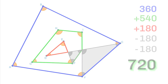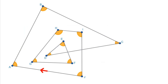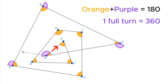Let's move on to the second solution. We call it Follow the Arrow. Imagine you are the red arrow shown in the diagram. You will race from vertex A to vertex J in order. As you go through each vertex, you will turn through the purple angles. Every purple angle is complementary to an orange angle. As you go through vertex D, you would have completed one full turn of 360 degrees.